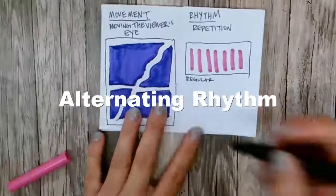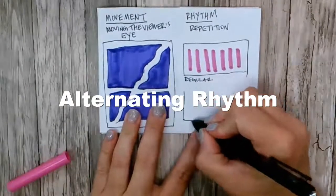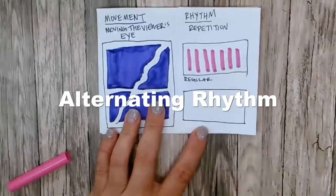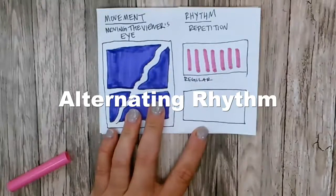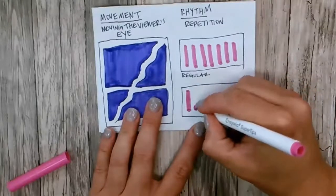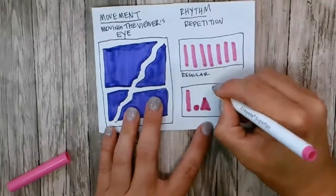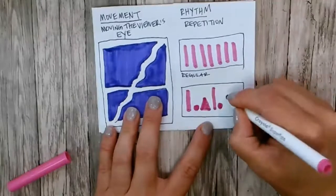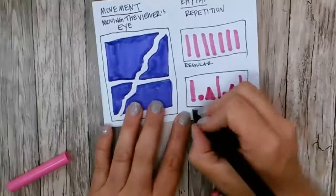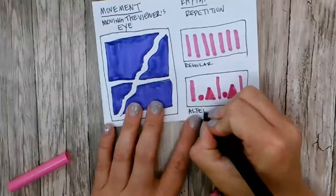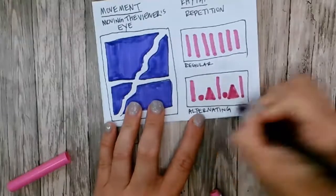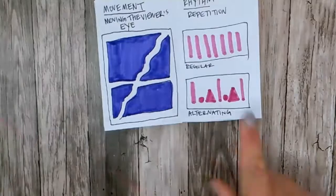Or we could have an irregular rhythm. I'm sorry, an alternating rhythm, which could be something like this. And there is irregular rhythm as well, we're just not going to draw it here.